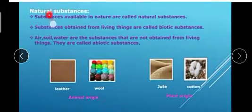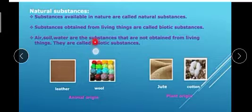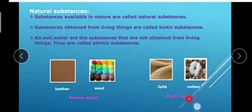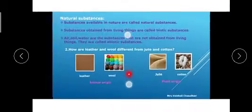What are natural substances? Substances available in nature are called natural substances. Substances obtained from living things are called biotic substances. Air, soil, and water are substances that are not obtained from living things - they are called abiotic substances. Leather is obtained from animals, so these substances are animal origin. Jute and cotton are obtained from plants, so we call them plant origin substances.